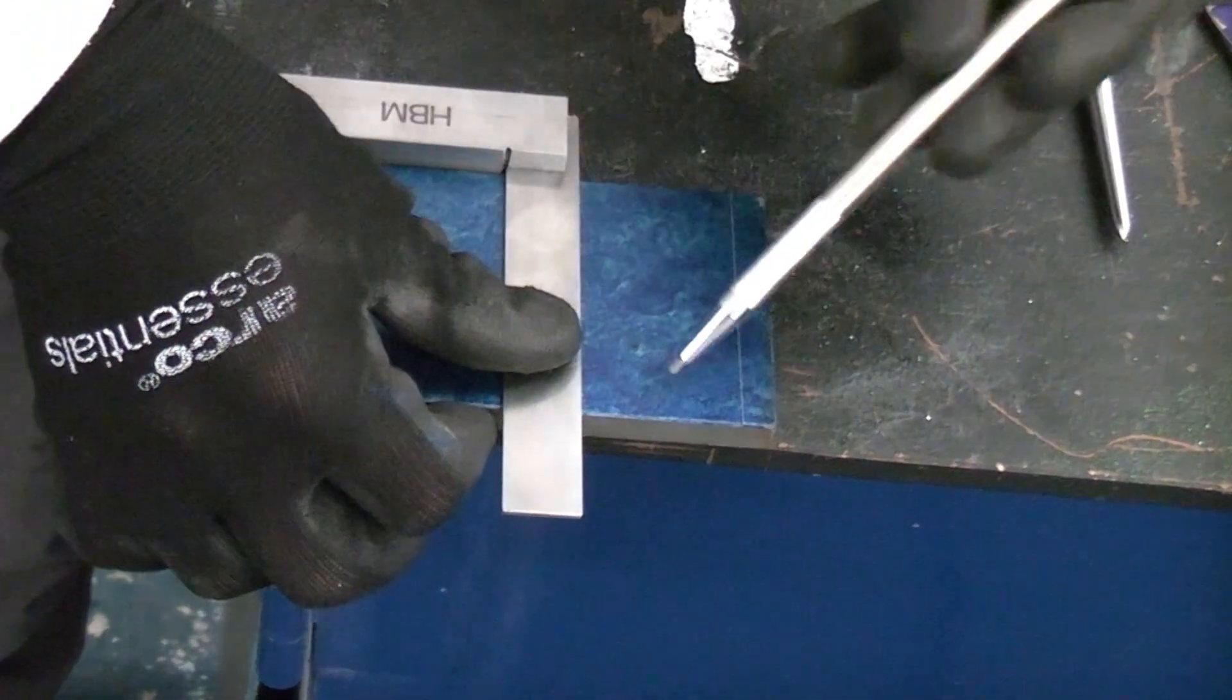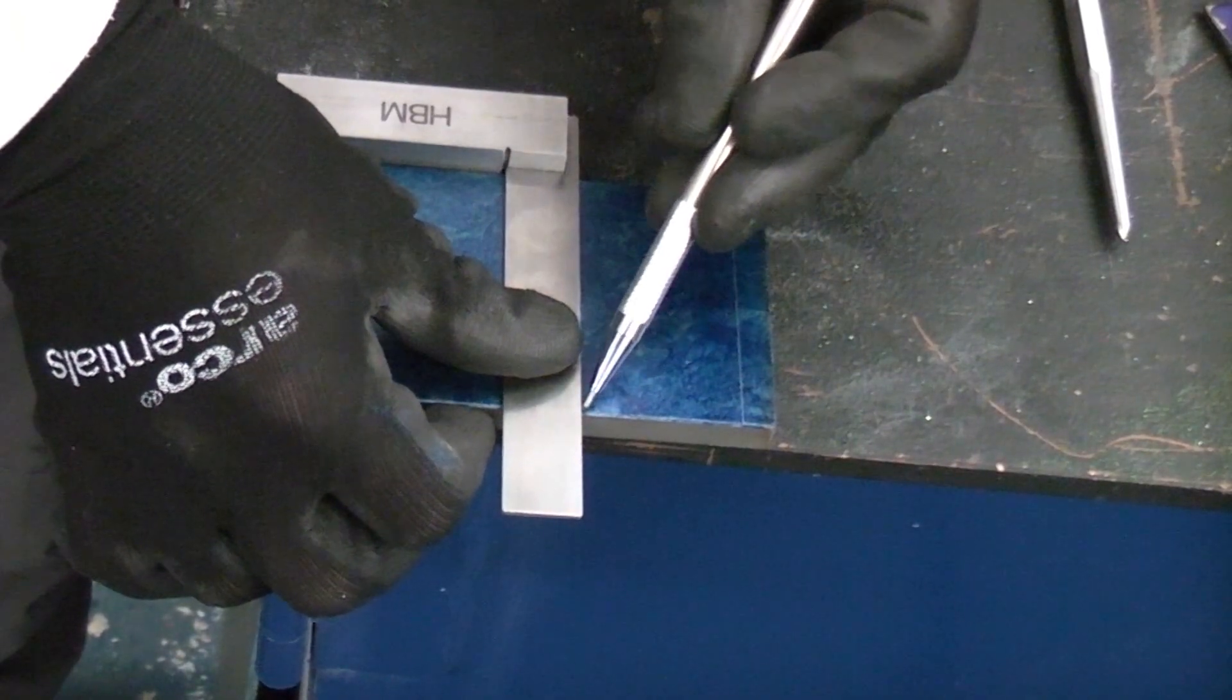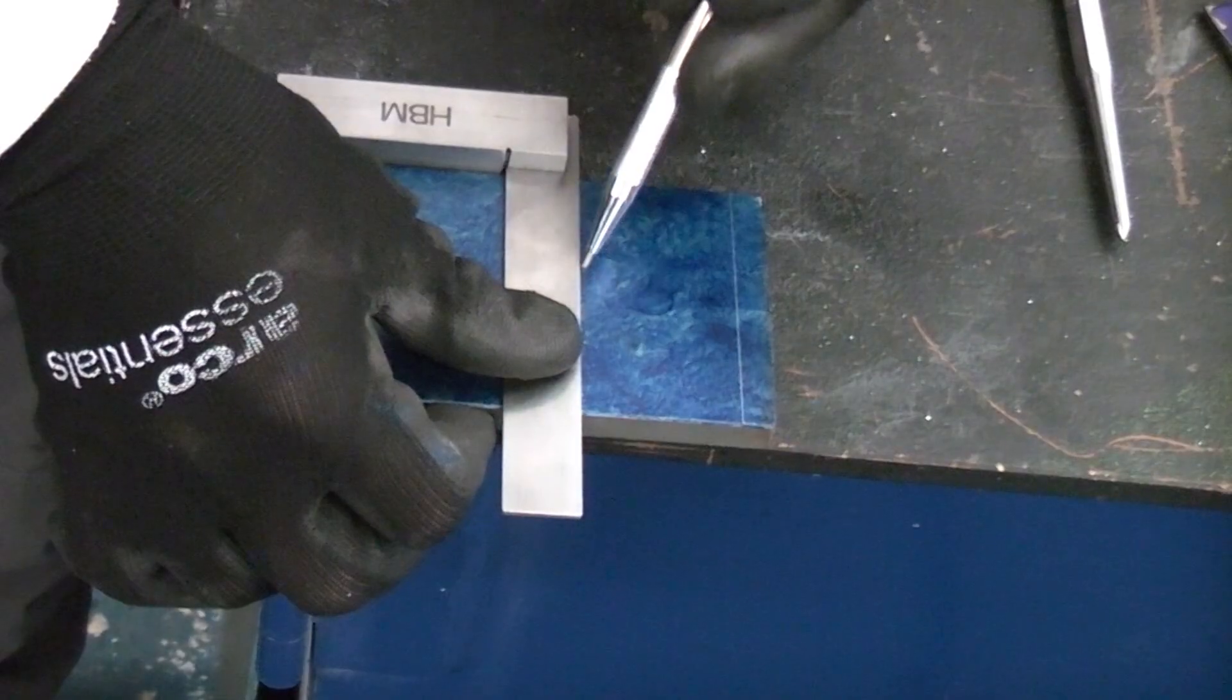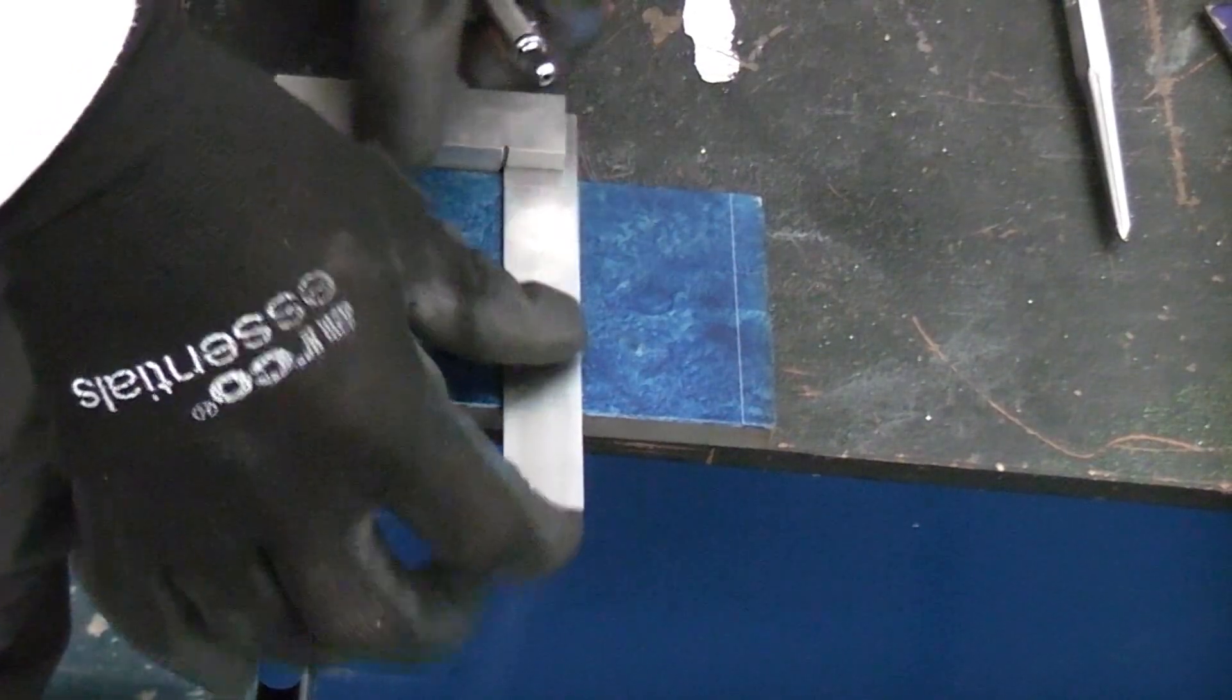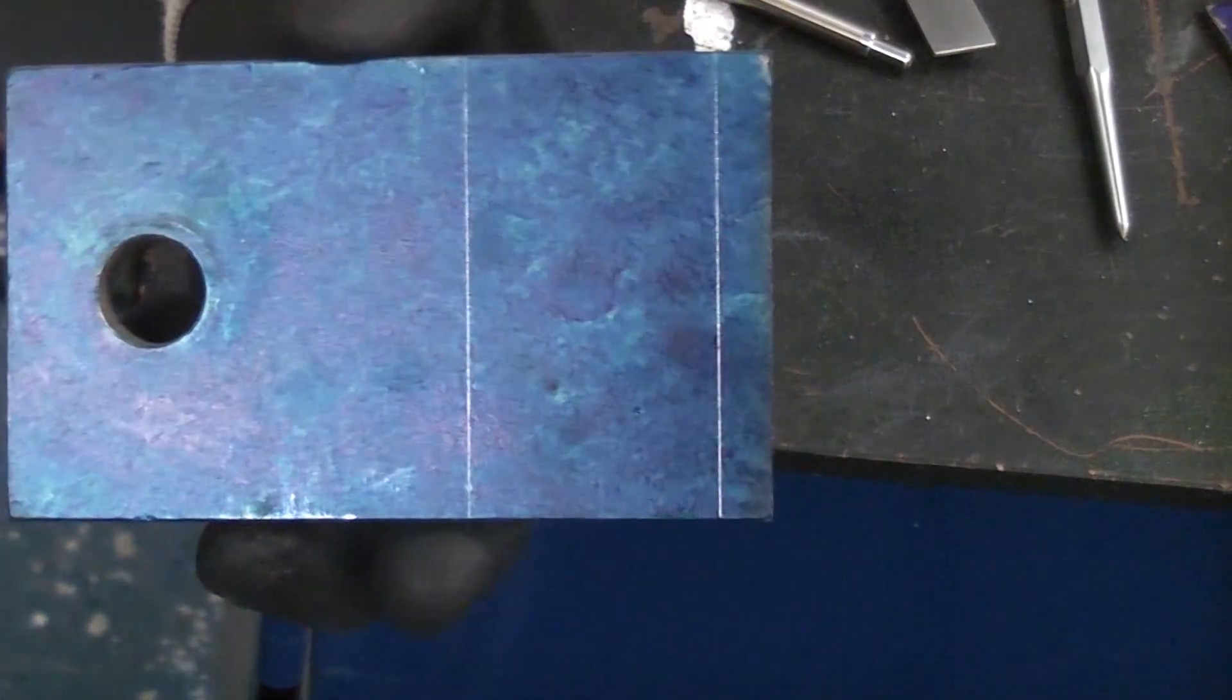We can then do a second scribe line. Again I'm using the scriber and I'm holding it on an angle and I'm now just going to scribe across there. So now we have our second scribed line.